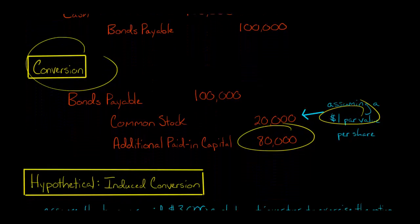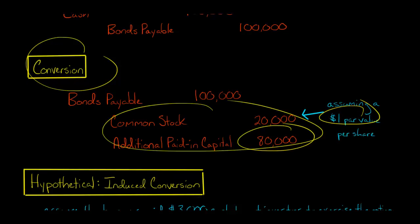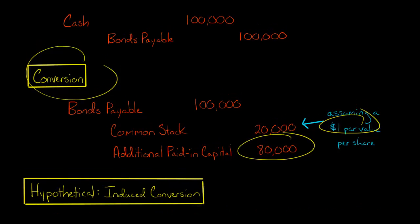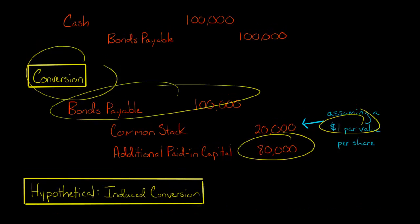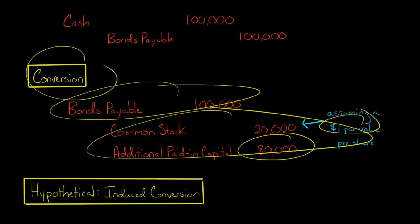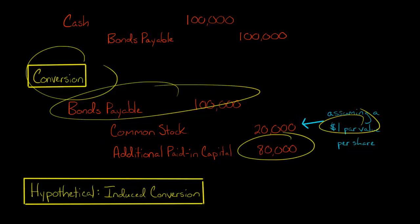If this was no-par stock, then it would all go to common stock and you wouldn't have an additional paid-in capital account. So that's how you account for the conversion — basically you get the liability off the books and credit the equity accounts.